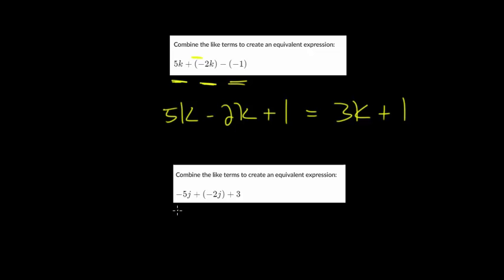And on to this one we have our j terms and we've got our constant term. So minus 5j plus a negative like we said above is the same as subtracting. So minus 5j minus 2j would be minus 7j. And then the 3 has nothing to combine with it. So we just have plus 3 on the outside.